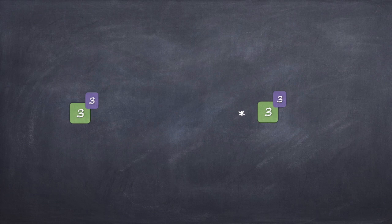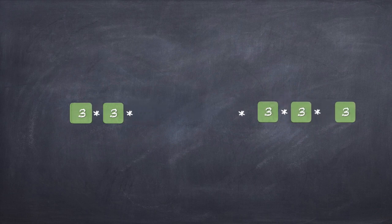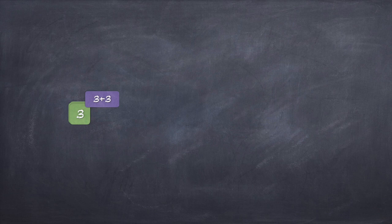Let's try one more example. Say you have 3 raised to 3 multiplied by 3 raised to 3. The first 3 raised to 3 means there are three 3s, and the second 3 raised to 3 also means three 3s, so there are a total of six 3s. The answer is 3 raised to 3 plus 3, which is 3 raised to 6.